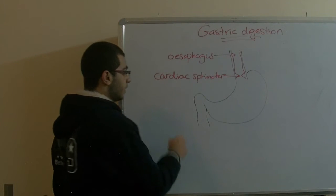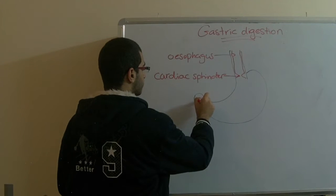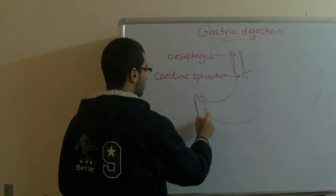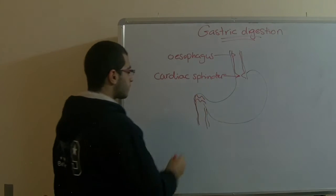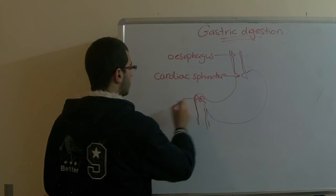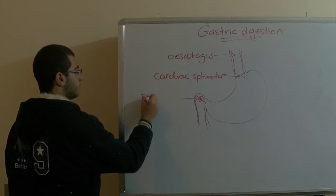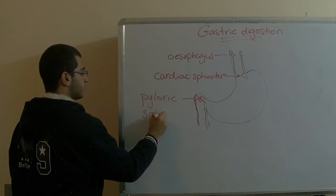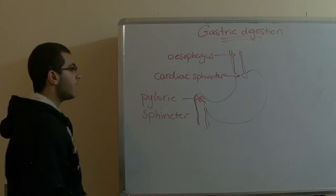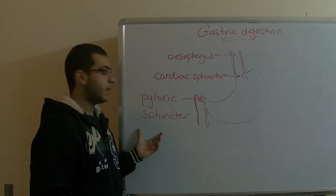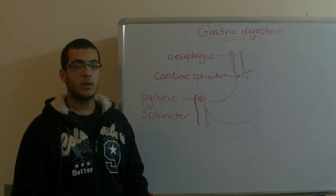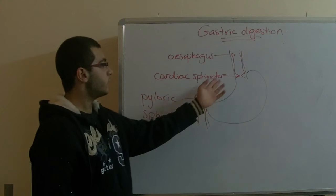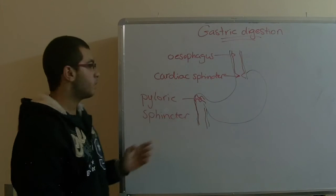While the other sphincter is called the pyloric sphincter, and this pyloric sphincter is smooth muscle or a smooth muscular valve. So this one is constricted and this is a smooth muscle.